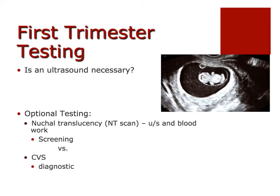We're going to go through each of the trimesters, and this recording will cover the first trimester testing. In the first trimester, women typically have an ultrasound. They also have the option of having a nuchal translucency — which I'm going to refer to as an NT scan — and a CVS, chorionic villus sampling.